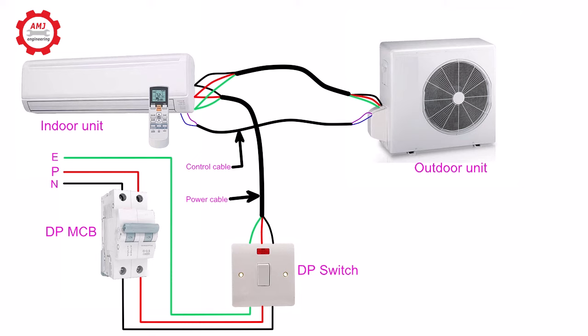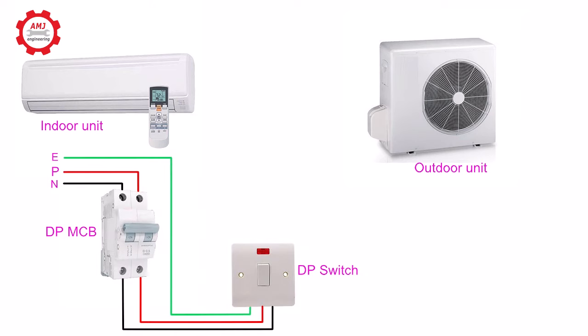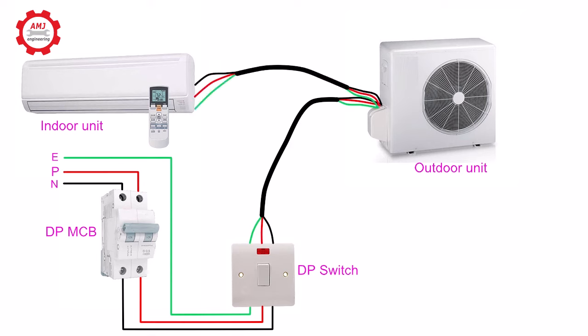That is why it's called indoor fed outdoor. The second one is the connection of split AC where outdoor fed indoor. Here the power lines from the double pole switch first go to the outdoor unit, and then the power supply is given to the indoor unit from the outdoor unit. The rest will be the same.